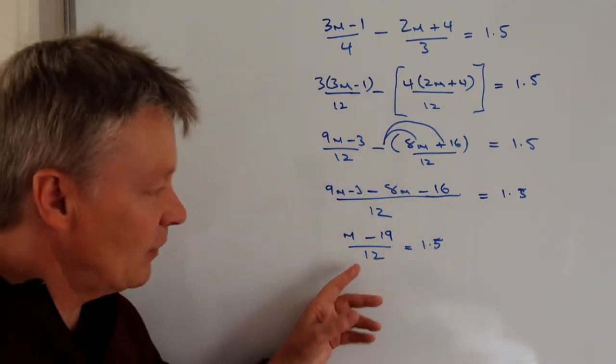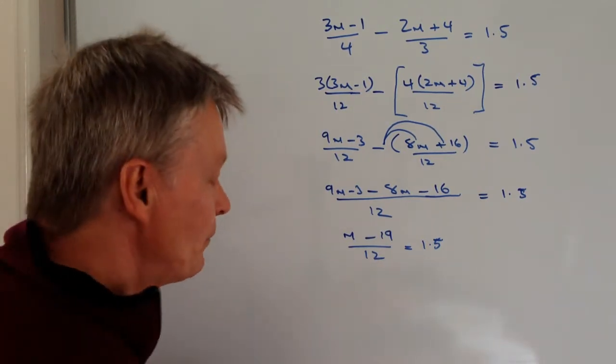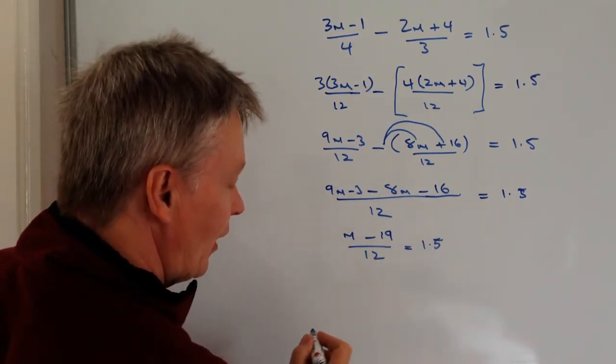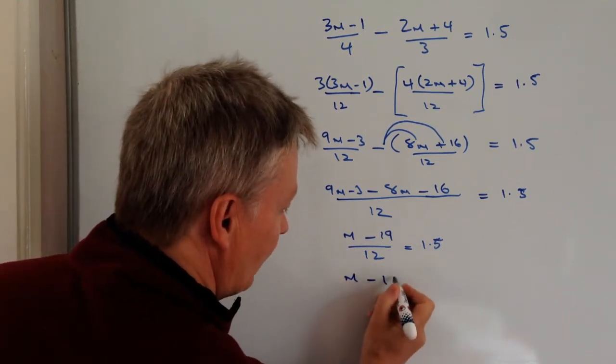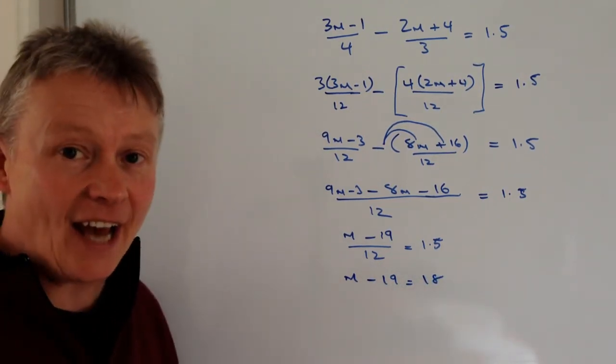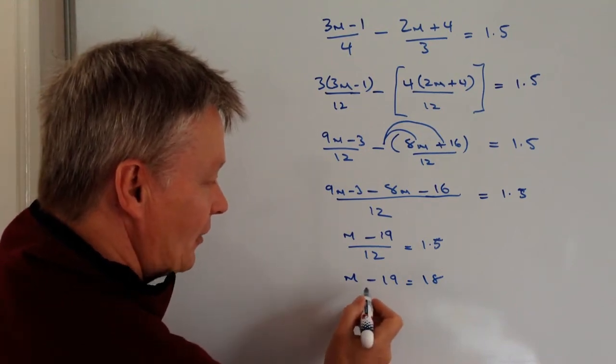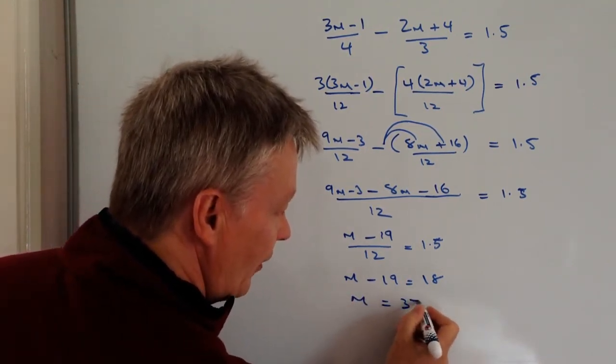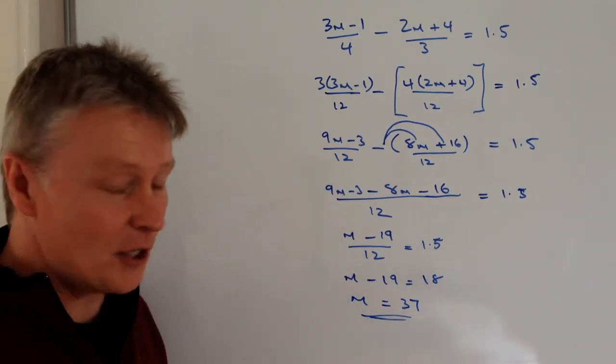And then it's just a case really of multiplying through both sides by 12, so 12 times 1.5 is going to be 18. So I've got m minus 19 equals 18, and then I'm going to add 19 to both sides. If I do that, I end up with m equals 37, and that is the answer to this particular question.